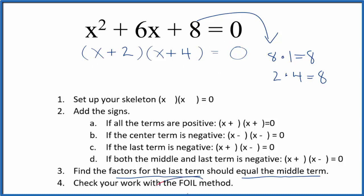Let's go ahead and use the FOIL method, though, to check our work. So first term, x times x, that's x squared. Outside, x times 4 is 4x. Inside, 2 times x, that's 2x. And then the last term, 2 times 4, that equals 8.